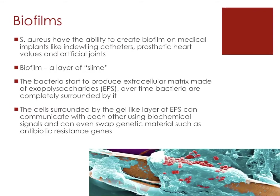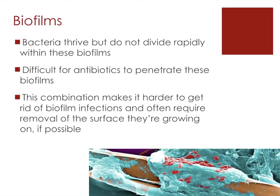Staph aureus has the ability to create biofilms, and they normally do this on medical implants like indwelling catheters, prosthetic heart valves, and artificial joints. A biofilm is like a layer of slime — think of strawberry jam where the seeds are the bacteria and the jam is the extracellular matrix made up of exopolysaccharides (EPS). Over time, bacteria can be completely surrounded by it. They use this gel-like layer to communicate using biochemical signals and can even swap genetic information like antibiotic resistance between bacteria. The problem is antibiotics cannot penetrate biofilms very easily, and sometimes the easiest solution is simply to remove that surface altogether.